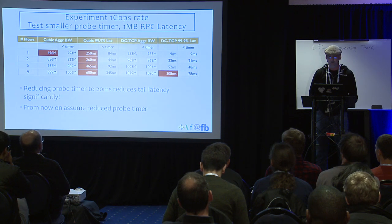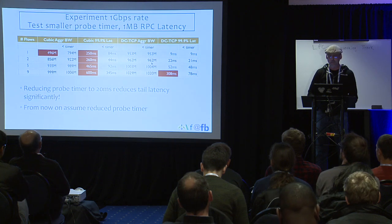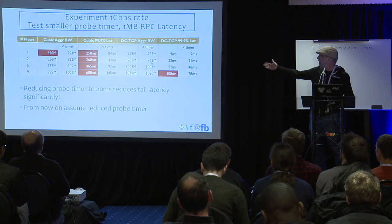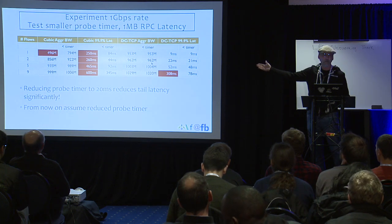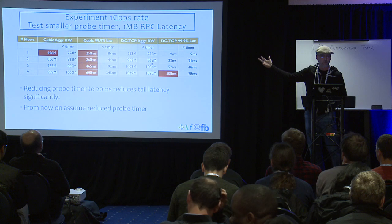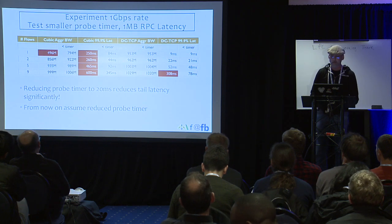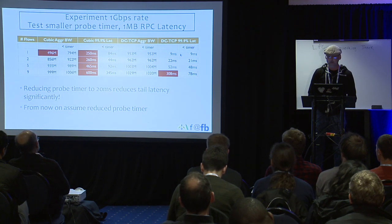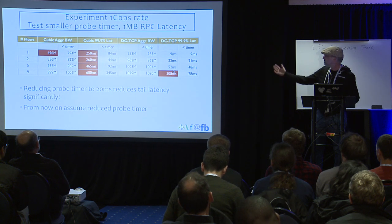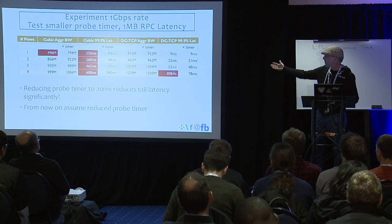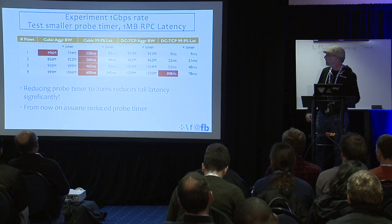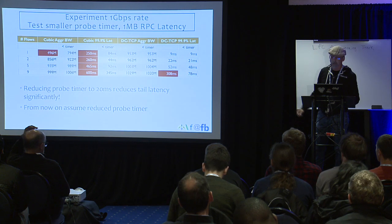Similarly for DCTCP: DCTCP is really good at fully utilizing the bandwidth even without the probe timer fix, so it's not affected as much. But the latencies are better, especially when we have many flows, with the smaller probe timer.